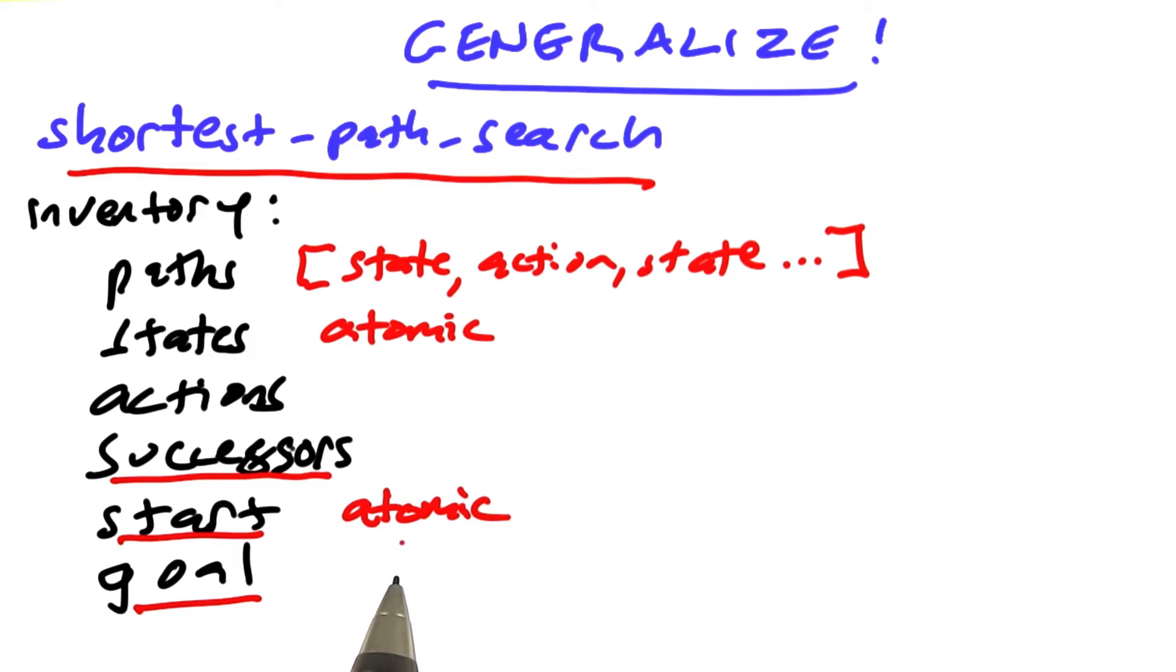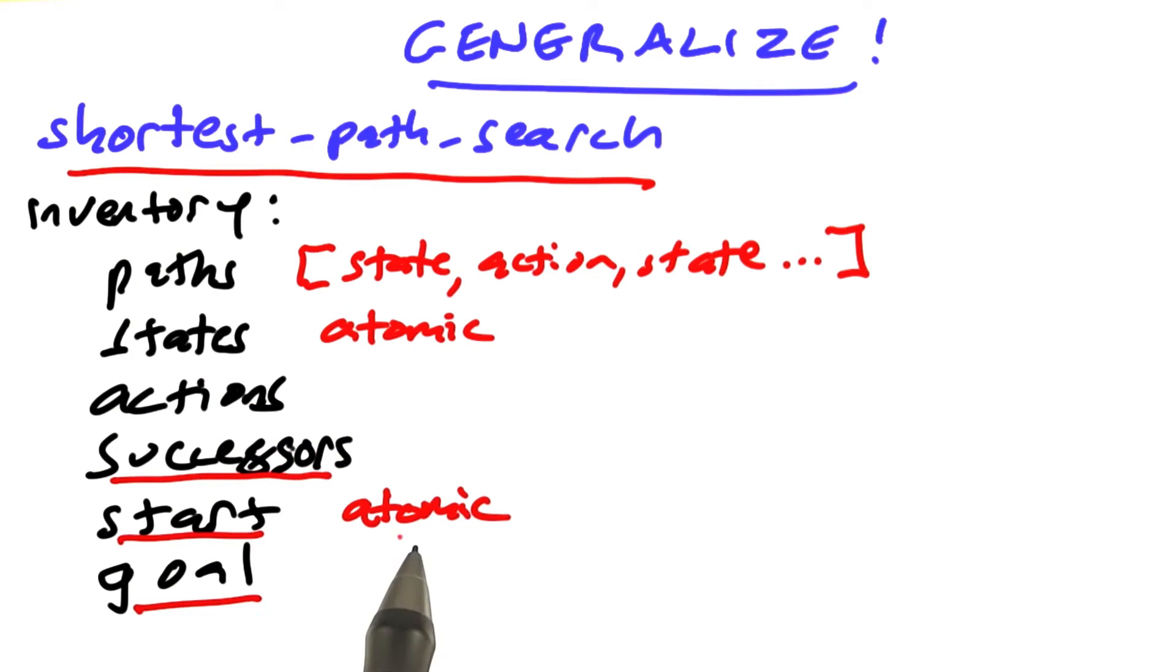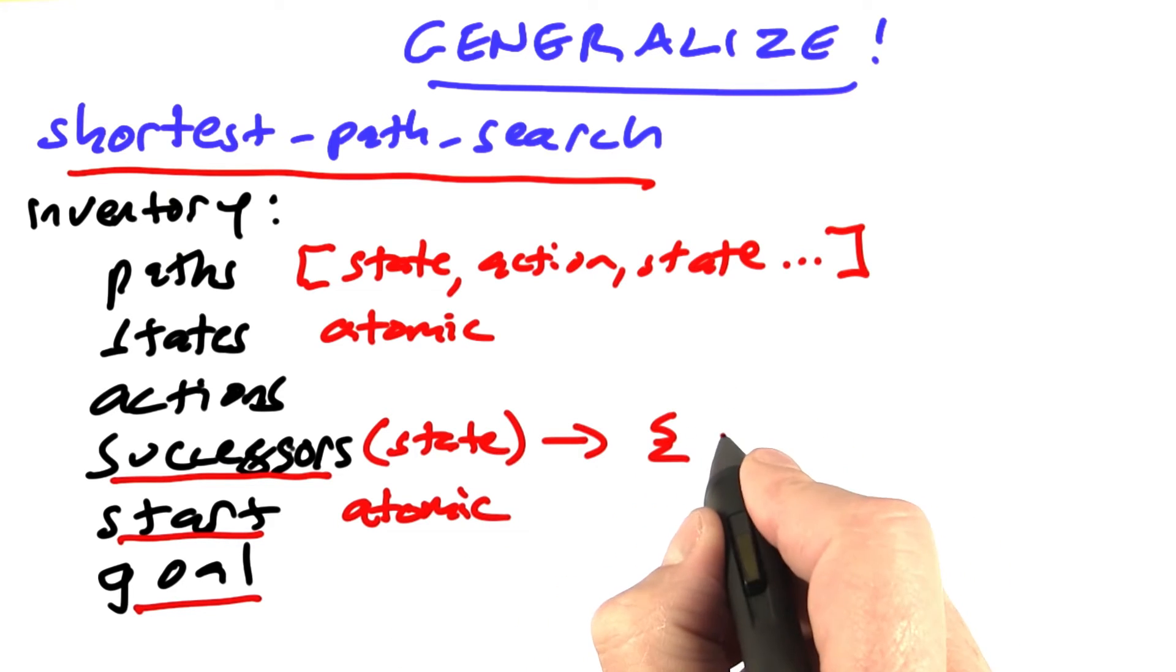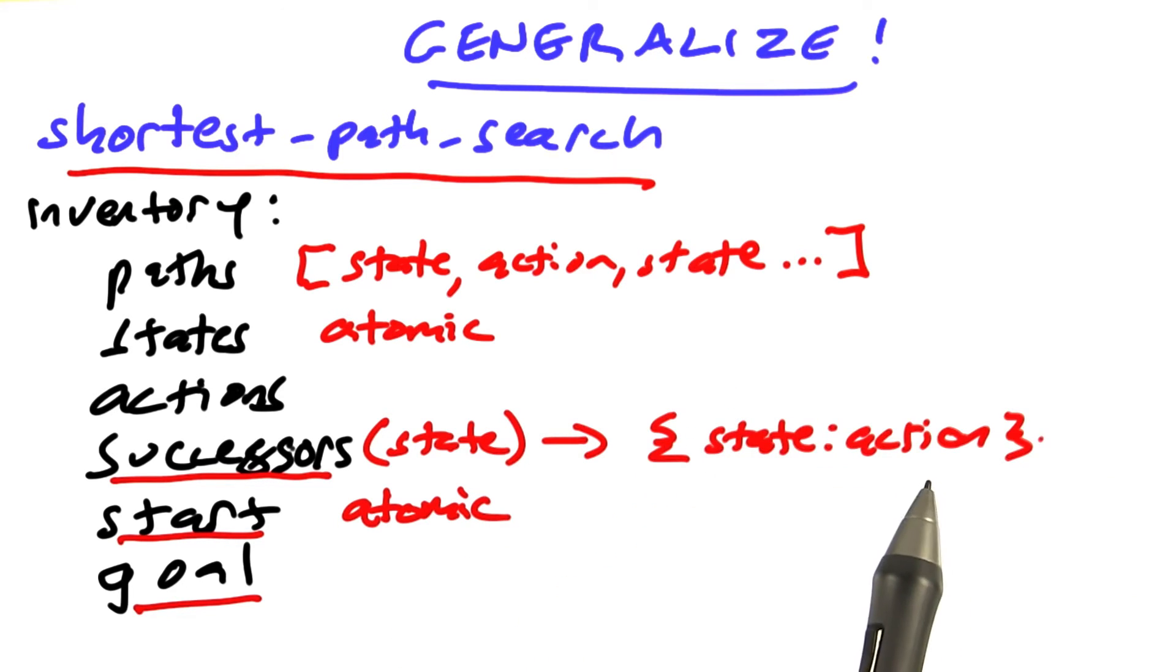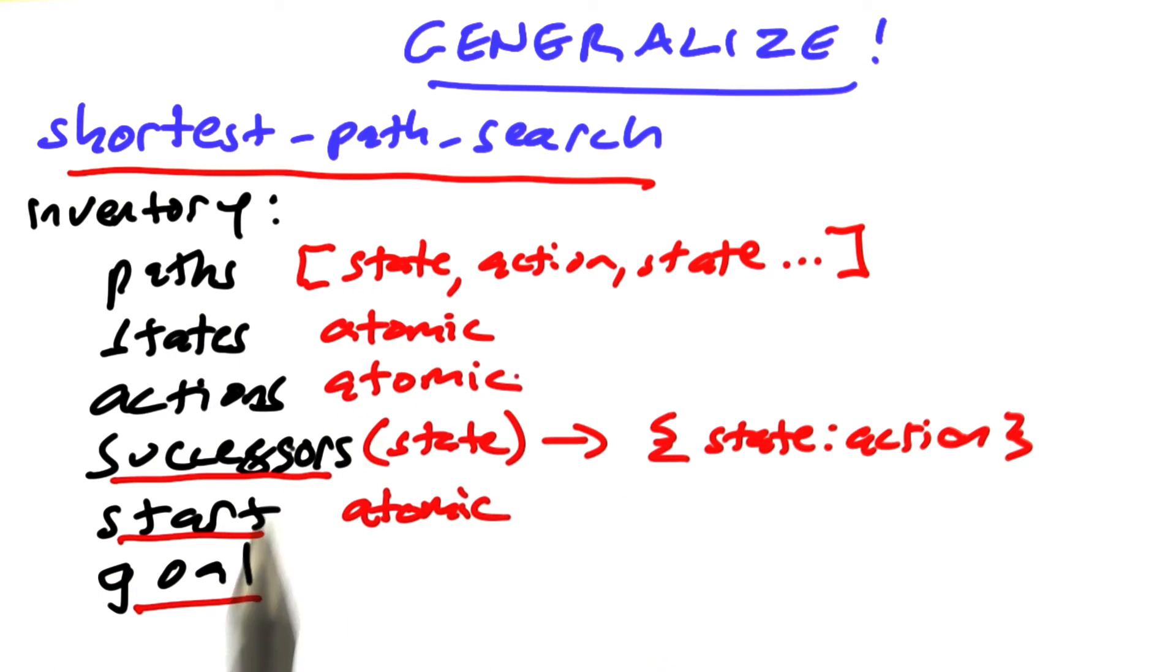When we go to use shortest path search for a particular problem, then we have to specify what a state looks like. But shortest path search itself doesn't have to know. All it has to know is that if you give the start state to the successor function, so successor will be a function which takes a state as input and returns a dictionary of state action pairs. Now, given that initial state that we were passed in, we can generate new states and new actions. And so the actions also are atomic. Shortest path search doesn't have to know anything about their representation other than that this is where they come from, from the successor function.